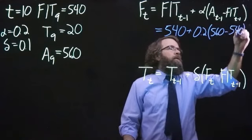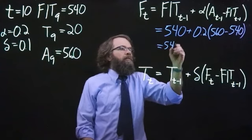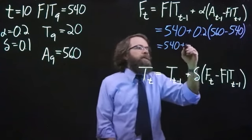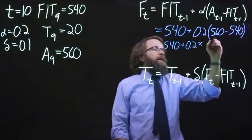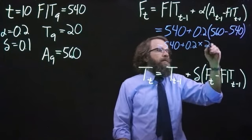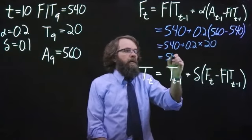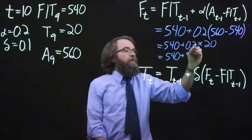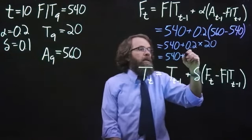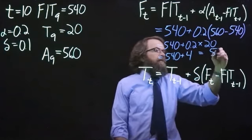So we get 540 plus 0.2 times (560 minus 540), which gives us 20. So we have 540 plus 0.2 times 20, and 0.2 times 20 is 4. So our new level is 544.